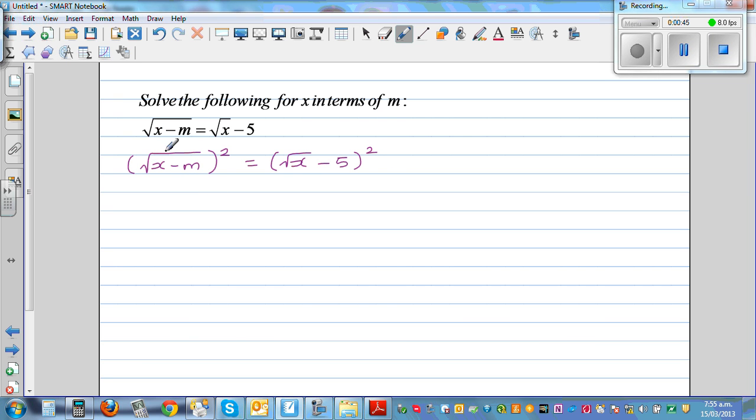So you have the radical or the square root, the whole square root, and you got a square outside. So square and square root cancel each other out. So this is x minus m.